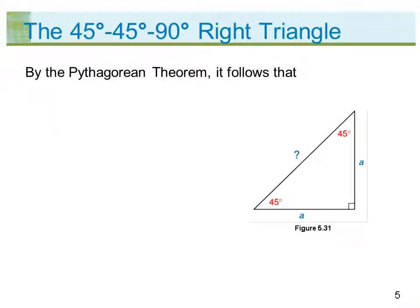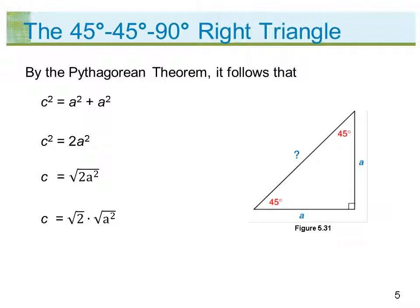By the Pythagorean Theorem, it follows that c squared equals a squared plus a squared, so c squared equals 2a squared. Therefore, c equals the square root of 2a squared, which equals the square root of 2 times the square root of a squared, giving c equals a times the square root of 2.